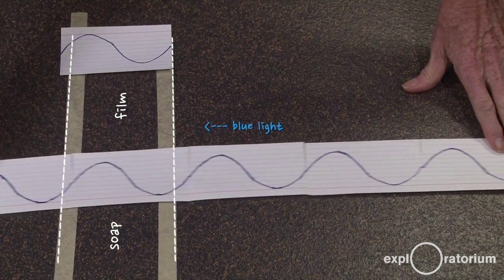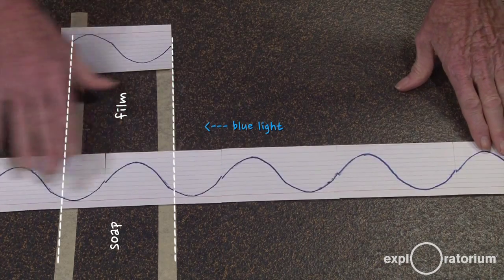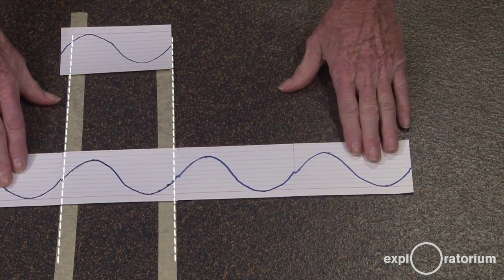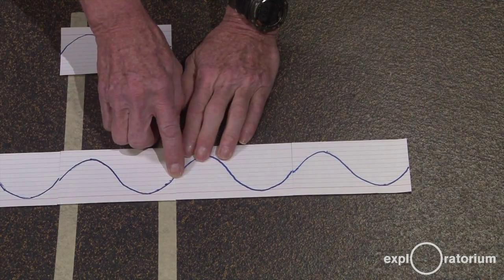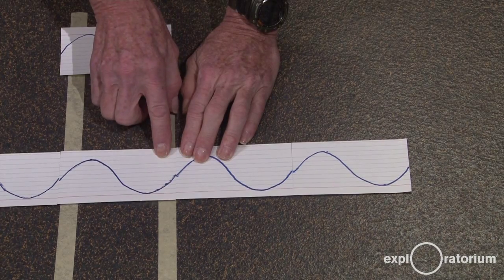When blue light comes into the soap film, most of it passes right through. However, some of the blue light reflects from the front surface of the soap film.